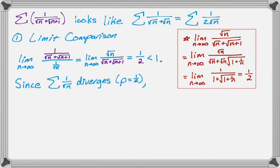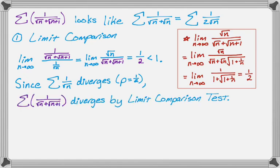So since the sum of one over root n diverges, it's p series with p equals one half. That means that we automatically know that the other series does the exact same thing because we got a ratio of less than one. So we will say the sum of one over root n plus root n plus one diverges by the limit comparison test.